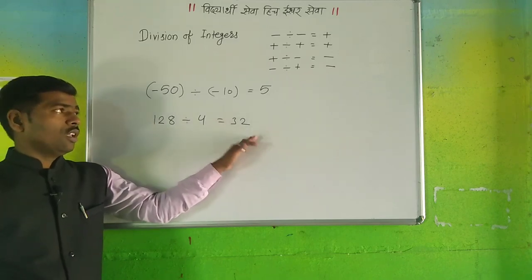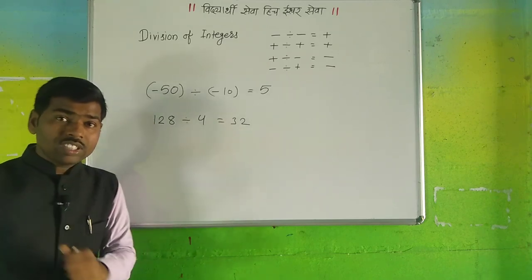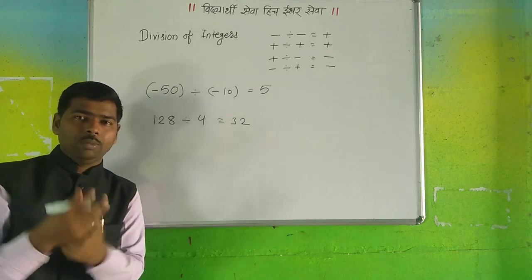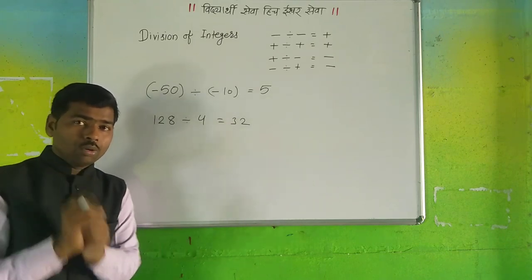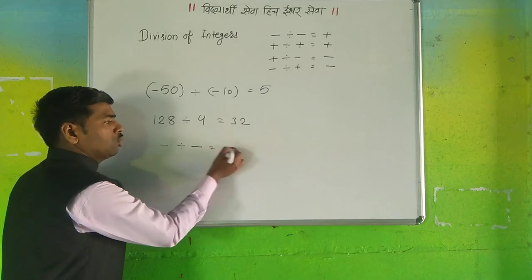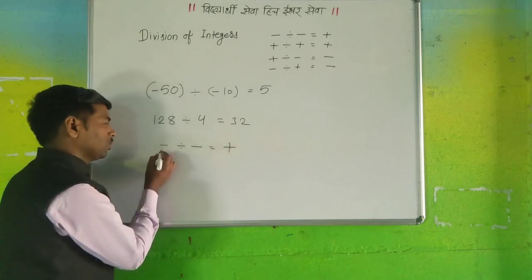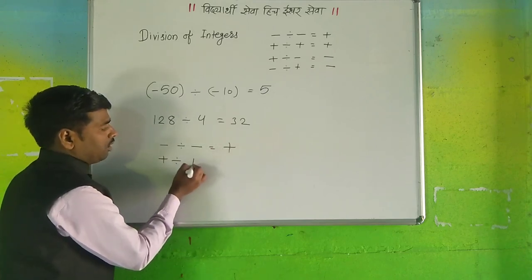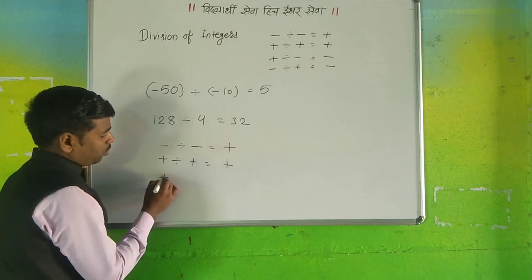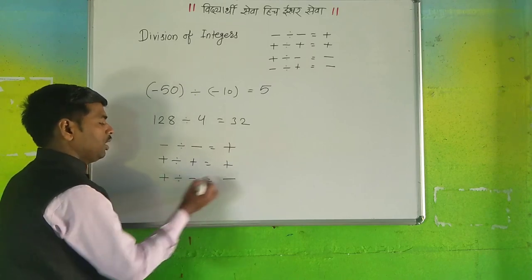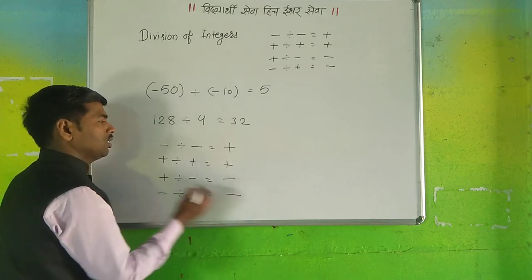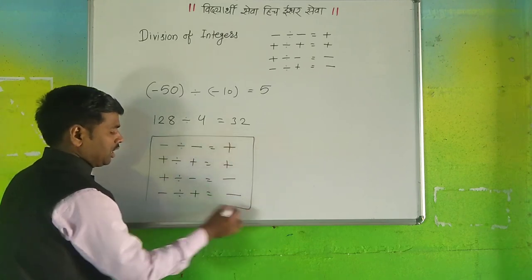The division and multiplication sign rules are: positive divided by positive is equal to plus. Plus divided by minus is equal to minus. Minus divided by plus is equal to minus. Minus divided by minus is equal to plus. This rules chart summarizes all the sign rules for division.